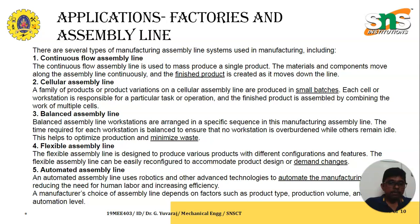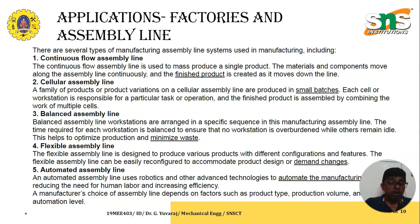There are five major categories of assembly lines. First, the continuous flow assembly line, where materials and components move continuously through the production line. Second, the cellular assembly line, which produces goods in small batches. Third, the balanced assembly line, which follows a specific sequence to ensure no workstation is idle. Fourth, the flexible assembly line, which can be easily reconfigured to accommodate product design or demand changes. Fifth, the automated assembly line, which automates manufacturing processes and reduces the need for human labor to increase efficiency.